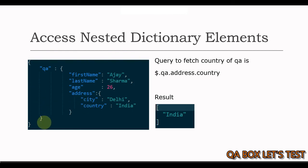Root node is a dictionary which contains a property qa which again is a dictionary, and this further contains a property address that too is again a dictionary. So let's fetch the country value from the address dictionary.